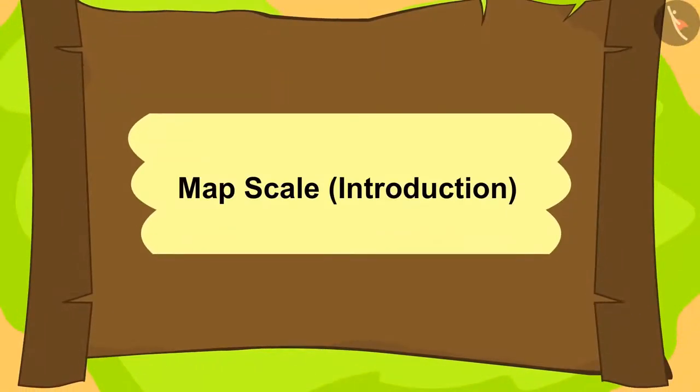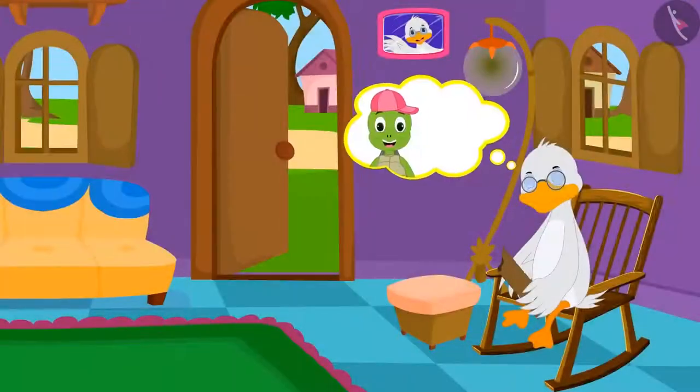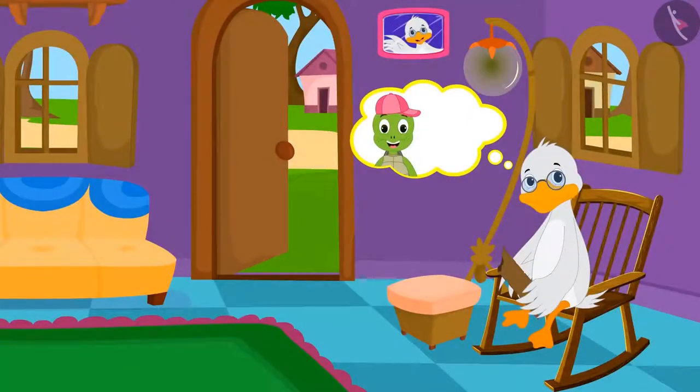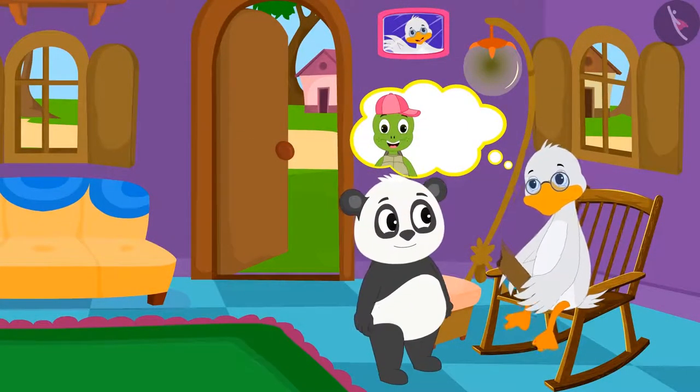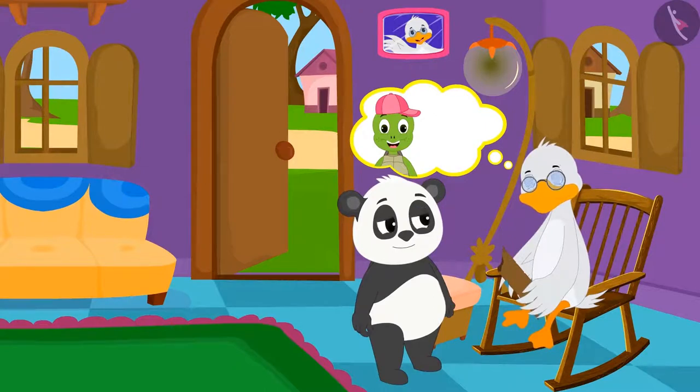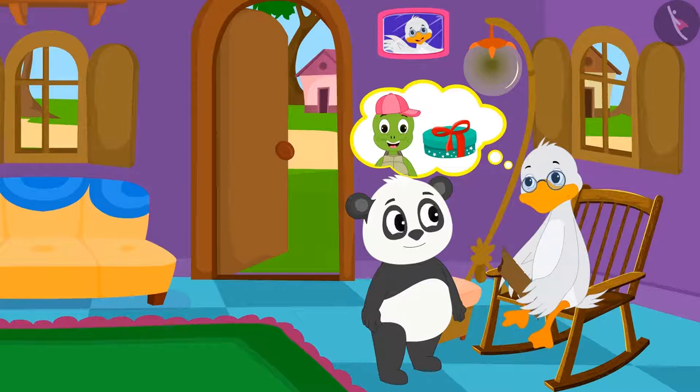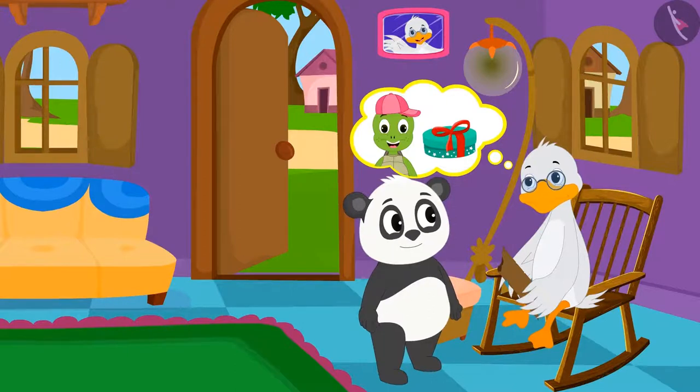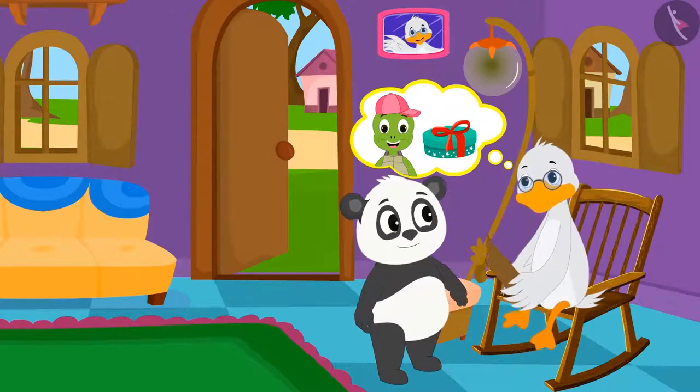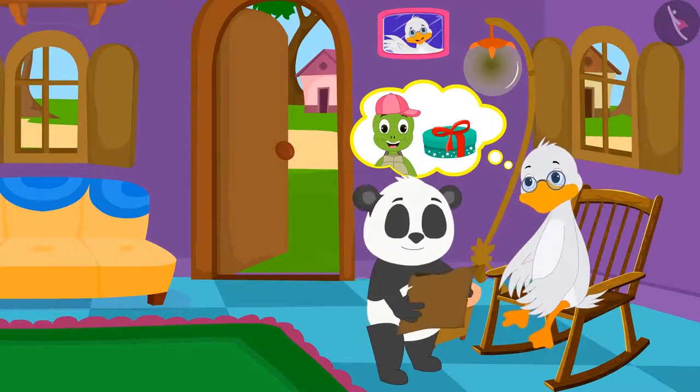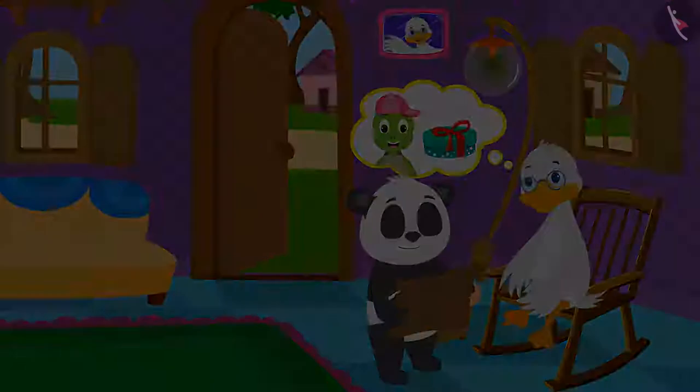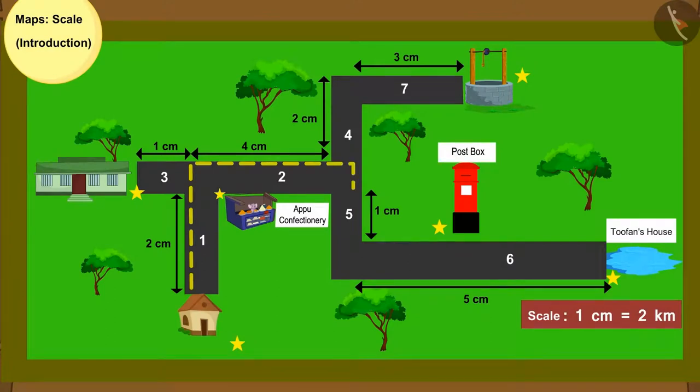Children, in this lesson, we will learn about the scales on maps. For Tufan Tortoise's birthday, Babel Duck Uncle sent some sweets with Golu Panda. Uncle gave Golu a map from his house to Tufan Tortoise's house, which was marked with a dotted line.